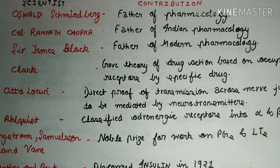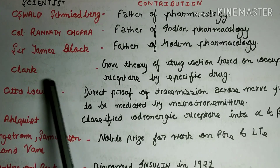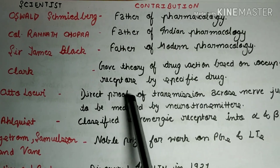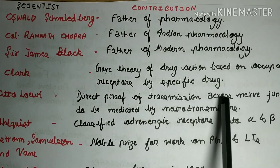There was a scientist named Clark. He gave a theory of drug action based on occupation of receptor by a specific drug.